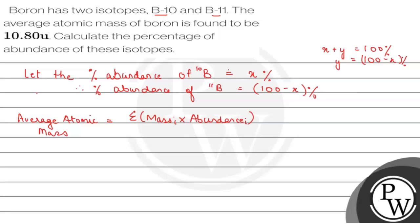We will put the values provided to us: 10.80, which is average atomic mass, equals mass number 10 into its abundance which is x, plus mass number 11 into its abundance which is (100 - x), divided by 100.